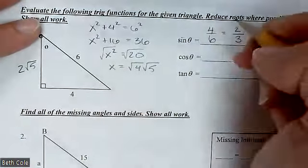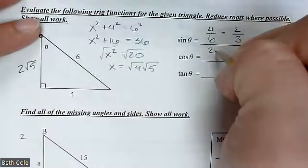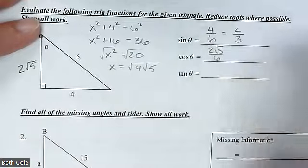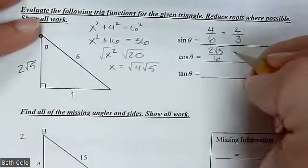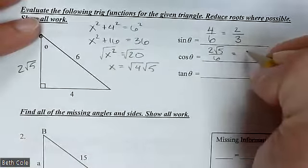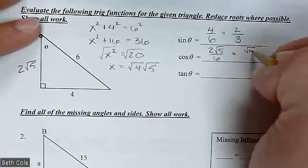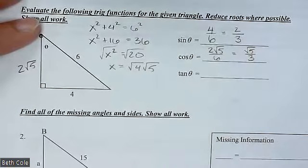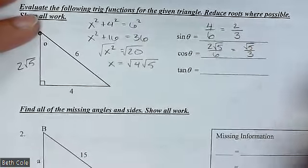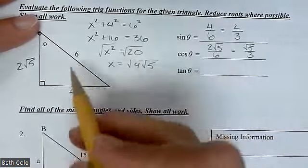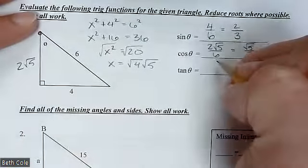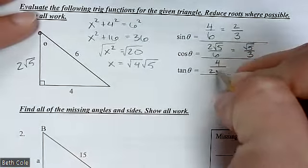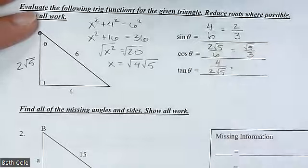Cosine is adjacent over hypotenuse, so that's 2√5 over 6. The 2 over 6 reduces to 1/3 — you don't have to write the 1 if you don't want to. Tangent is opposite over adjacent, so that's 4 over 2√5.